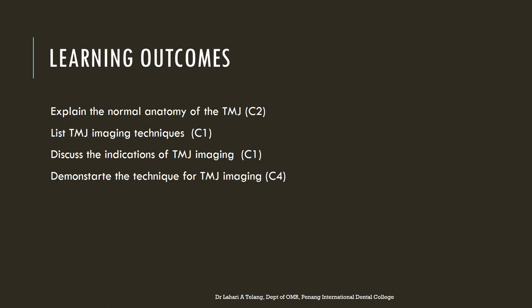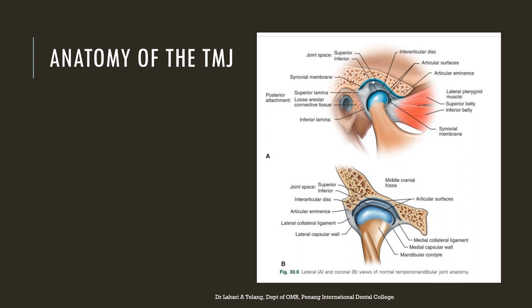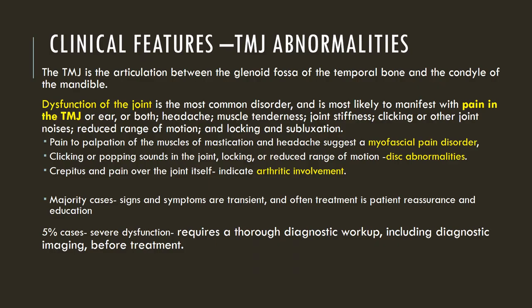To summarize the anatomy of the temporomandibular joint: it is important to remember that the joint comprises of the head of the condyle, the articular surface and the eminence, and there is an interarticular disc which is a fibrocartilaginous structure. The TMJ is an articulation between the glenoid fossa of the temporal bone and the condyle of the mandible.